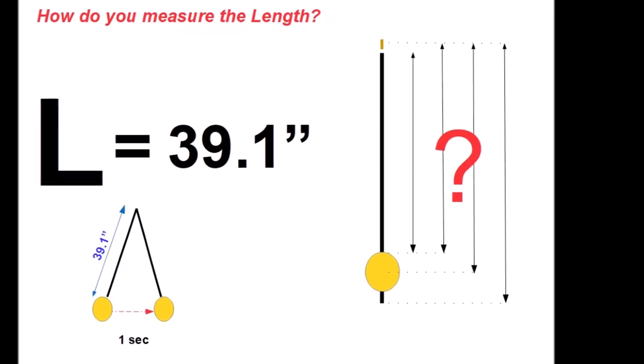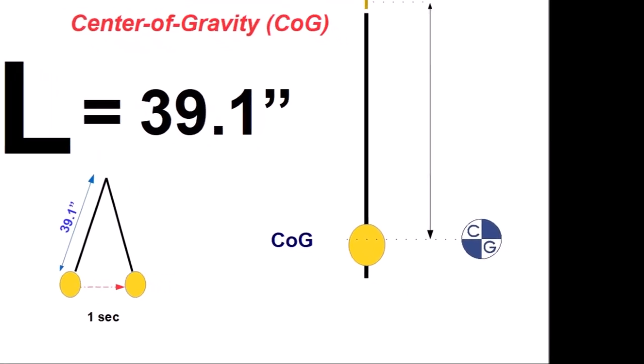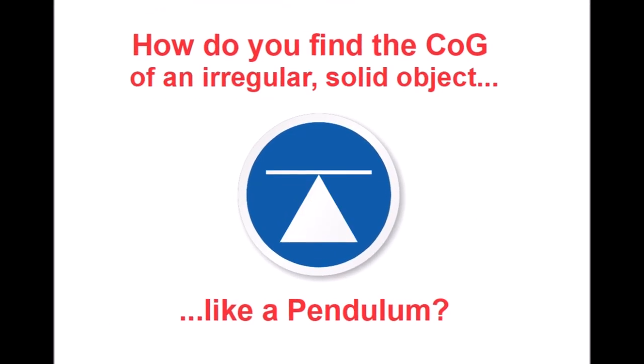But how do you measure the length from where to where? Turns out it's from the top pivot point to the center of gravity. How do you find the center of gravity of a Pendulum?